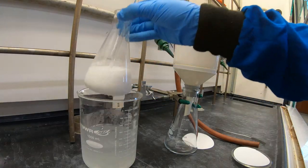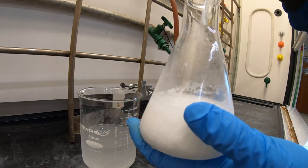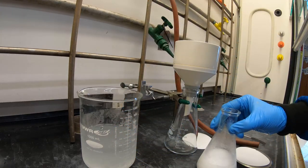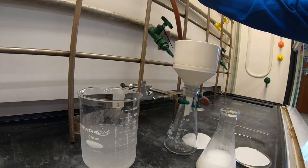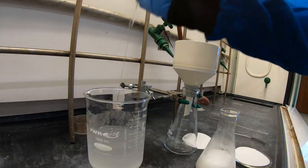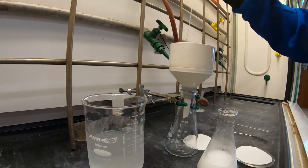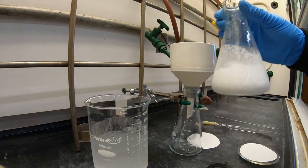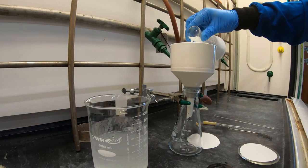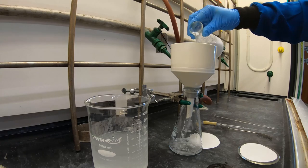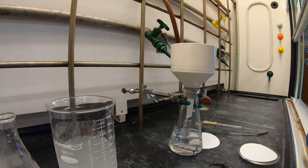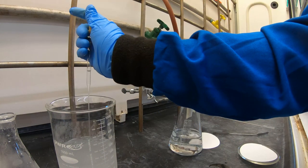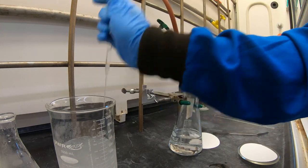While you're waiting on your product to chill in the ice water bath, set up your vacuum filtration apparatus. Then dampen your filter paper using a small amount of cold water. Begin to filter your product, swirling the flask as you go so that you collect as much product as possible. Then rinse the solid using a small amount of cold water to remove any remaining acid.